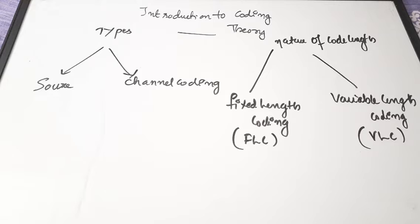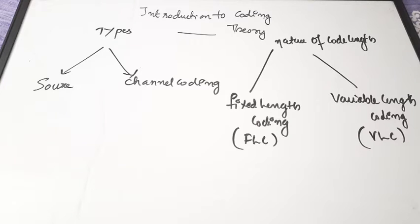There are mainly two types of coding based on where we are actually going to perform the coding. In a communication system — as discussed in the introduction to ITC video using Shannon's model — there is a source and a channel. If you perform coding at the source it is called source coding, and if you perform coding in the channel it is called channel coding.